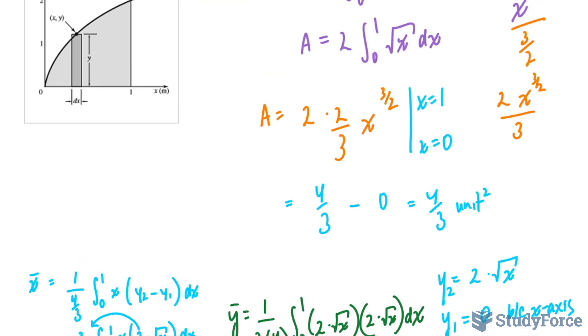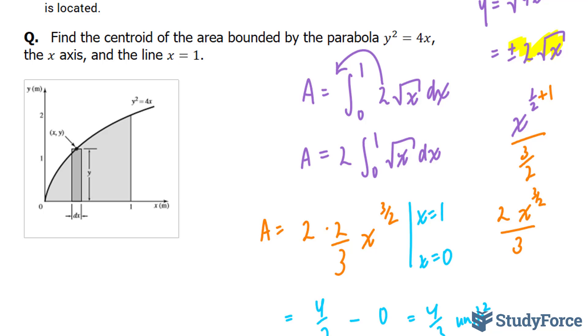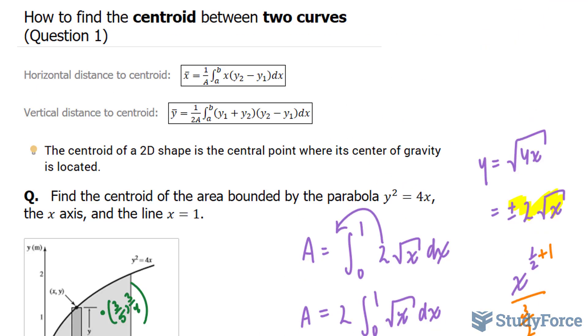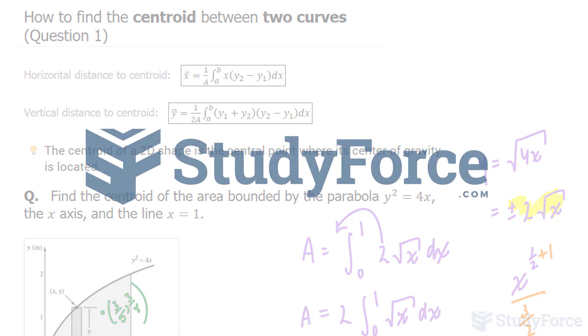Let's see where that lies. That would be 3 fifths of the way here and 3 quarters of the way up. So somewhere here. And there you have it. That is how to find the centroid between two curves. Make sure to watch question 2 for another example.